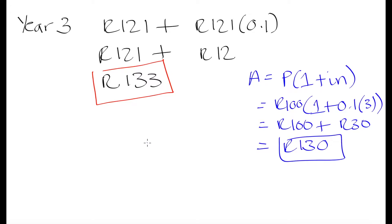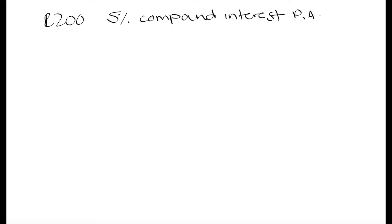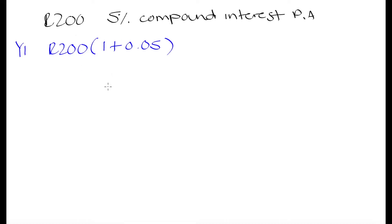In this lesson, we are going to find a formula to calculate compound interest, similar to the APIN formula we found for simple interest. Let's say we had 200 Rand deposited into a savings account paying 5% compound interest per annum. At the end of year 1, the amount of money we have is our principal of 200 multiplied by 1 plus 0.05. Expanding that out: 200 plus 5% of 200 — principal plus interest — which comes out to 210 Rand.